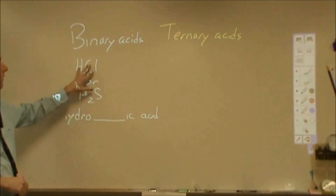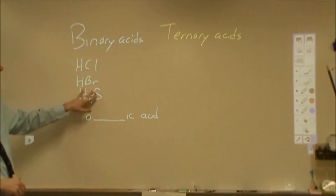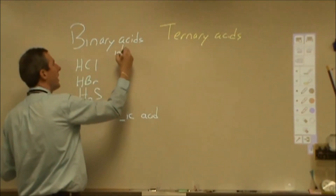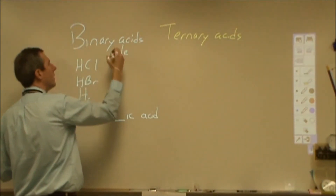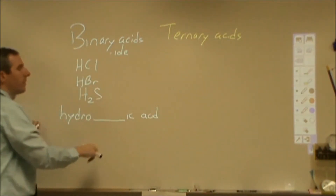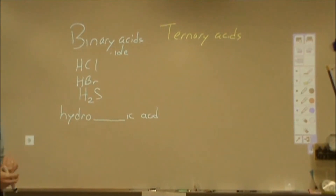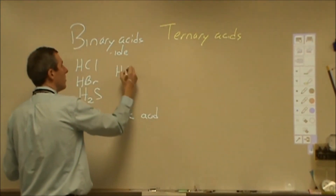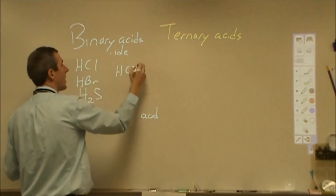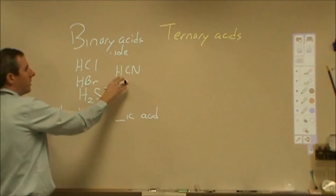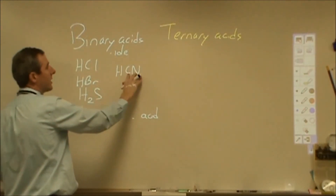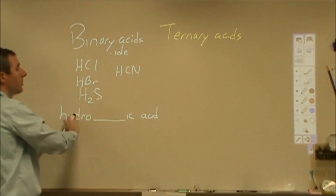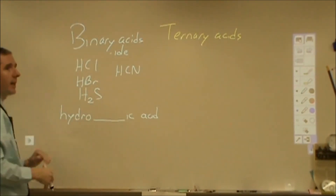Another way to identify a binary acid is that anything where the anion ends in '-IDE' is going to follow this naming system. So even if you have something like HCN, which is not technically a binary acid, because the cyanide is a polyatomic ion, this would still be named hydrocyanic acid.